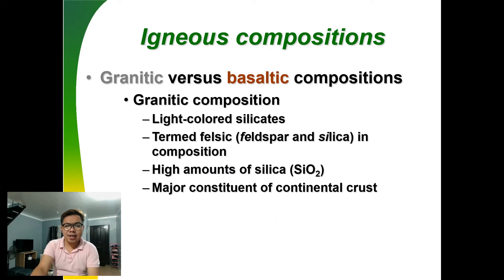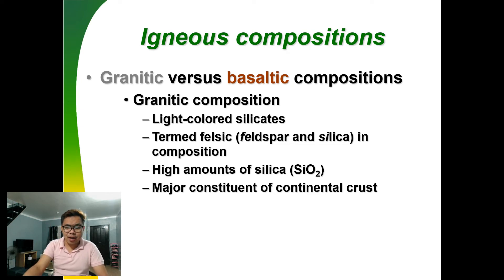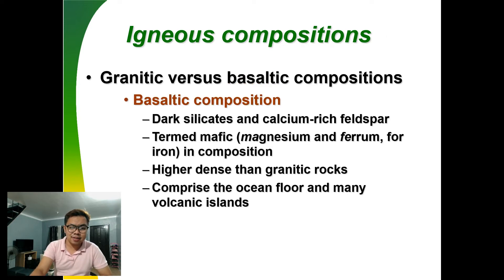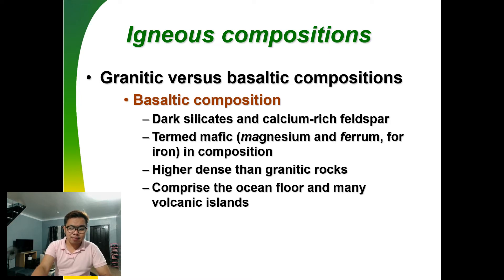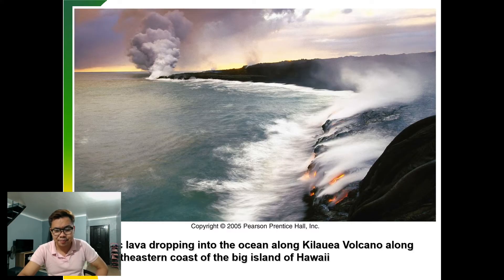In terms of igneous compositions, we have granitic and basaltic types. Granitic composition has a light color in terms of silicates, referred to as felsic — rich in feldspar and silica — with high amounts of silica. Its constituent is usually continental crust. Basaltic composition contains dark silicates and calcium-rich feldspar, referred to as mafic — rich in magnesium and iron. It is denser than granitic rocks and comprises the ocean floor and many volcanic islands, as seen in this example from Hawaii.